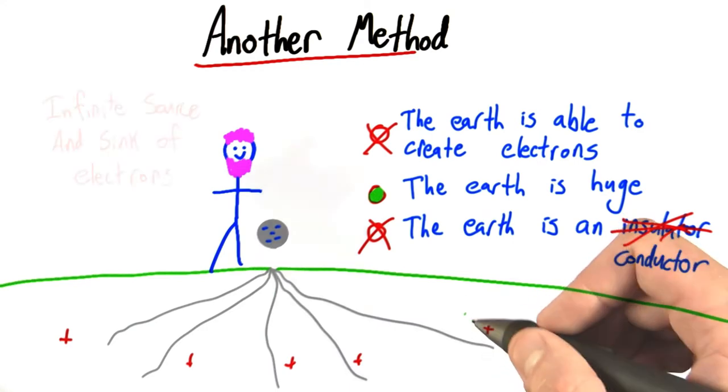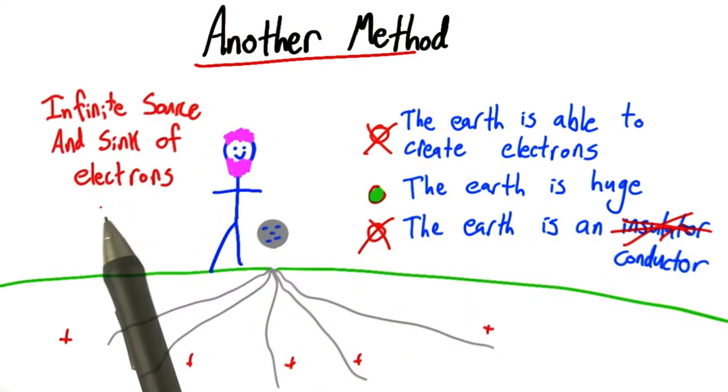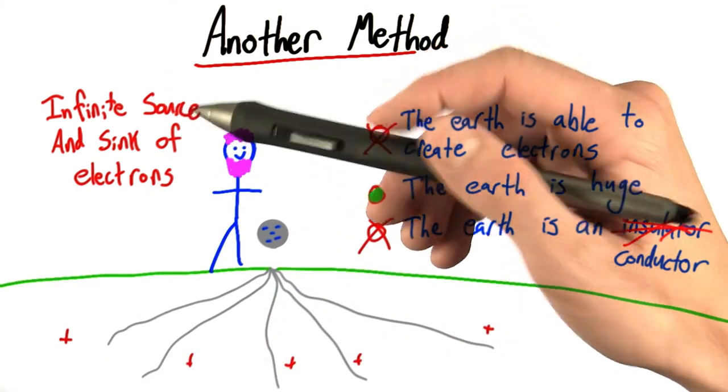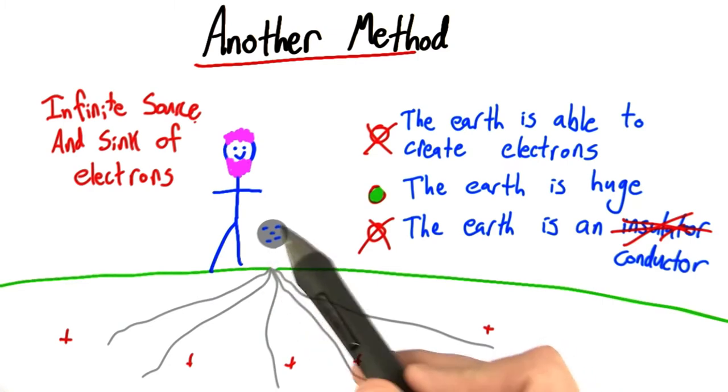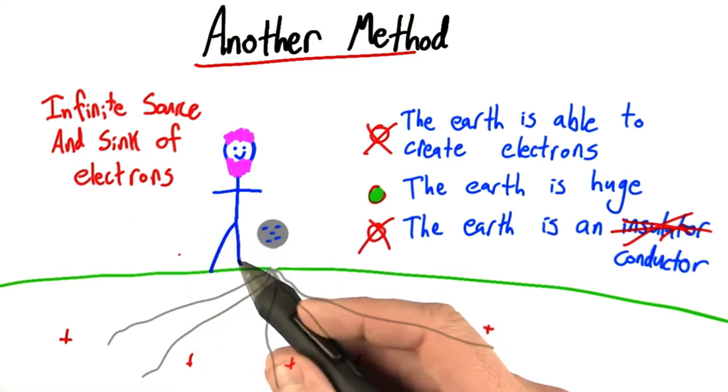The truth is, the Earth serves as an infinite source and sink of electrons. Source means, for all effective purposes, we can count on the Earth to provide us with whatever electrons we need in this situation. Likewise, we can also deposit electrons into the Earth essentially infinitely.